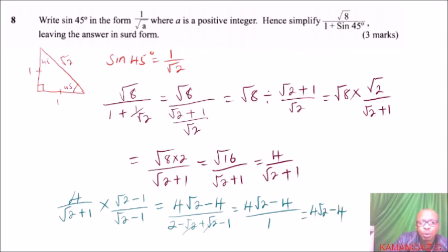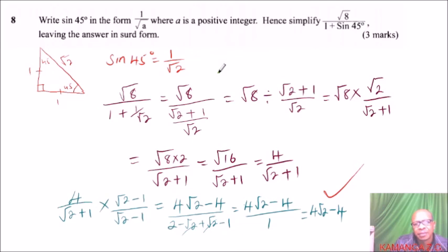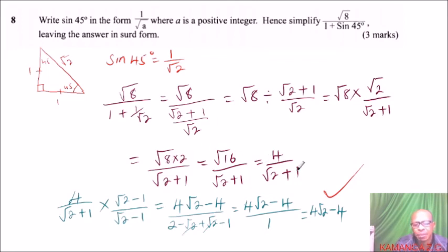That is how you work out that question. The important things are: knowing how to express special angles — 30, 45, and 60 degrees — in surd form, and then knowing how to simplify a surd expression by rationalizing the denominator.